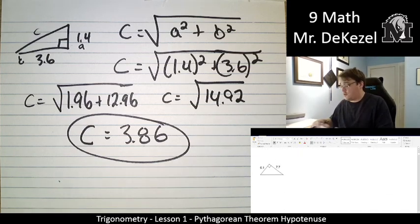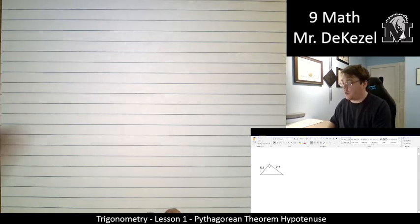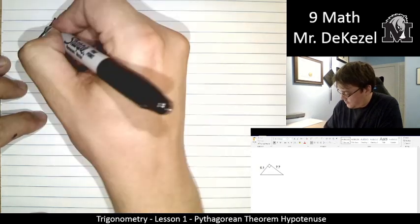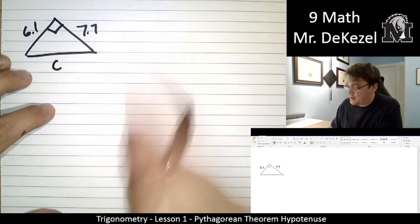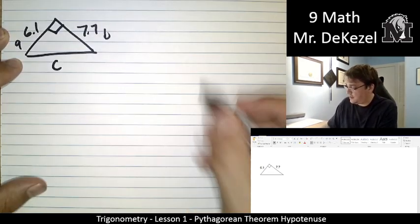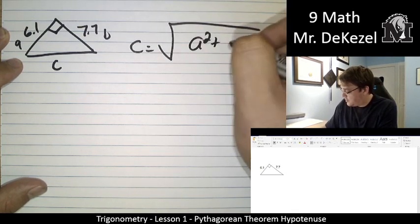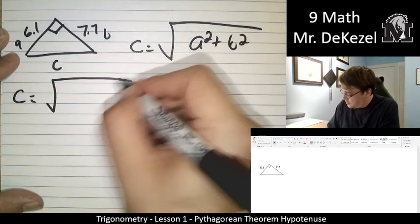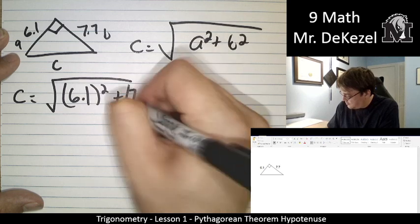It's going to be the same. This one we're only dealing with the hypotenuse. So we're only finding C. 7.7 and 6.1. C is the longest side across from the right angle. This can be A and this can be B. C is equal to the square root of A squared plus B squared. So C is equal to the square root of 6.1 squared plus 7.7 squared.